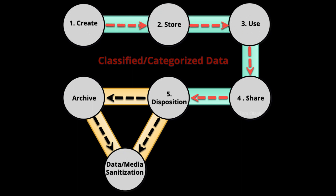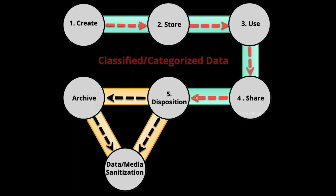This is the overall life cycle of data. Each of the five nodes requires its own policies and safeguards to achieve regulatory, ethical, and business requirements. Security teams can use this model to work with data owners to identify and address security gaps throughout the life cycle.